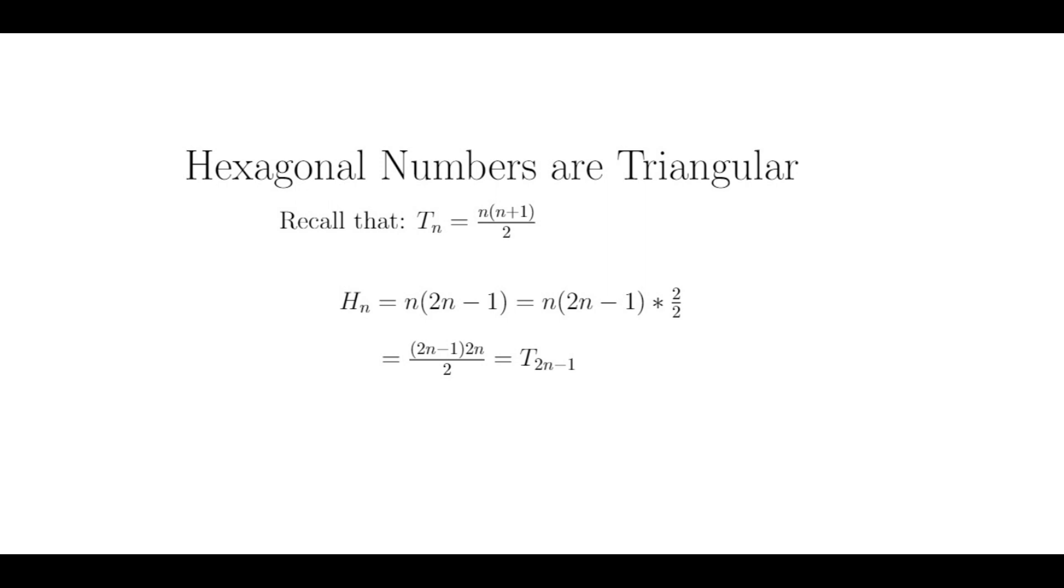Then we get an expression very similar to our formula for triangular numbers, except we have 2n minus 1 instead of n. Therefore, the nth hexagonal number is actually the 2n minus 1th triangular number, T sub 2n minus 1.